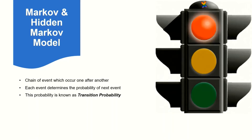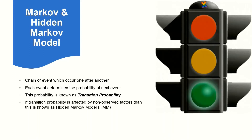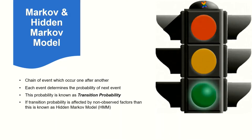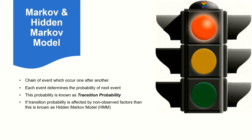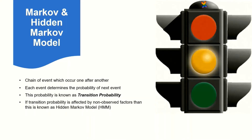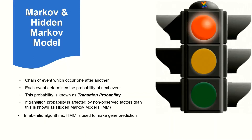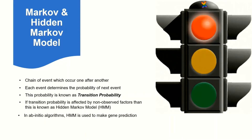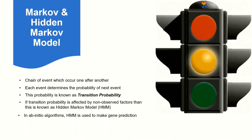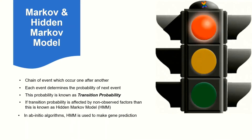Sometimes there may be unknown or unobservable factors which may influence the transition probability. In this case the straightforward Markov model cannot be applied. There is another model which is known as the hidden Markov model. Normally for gene prediction the hidden Markov model is used.